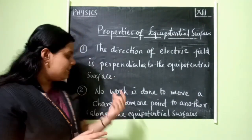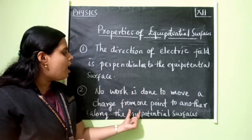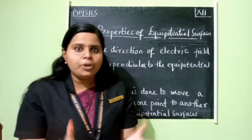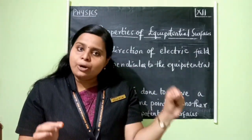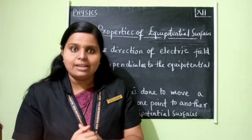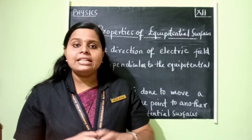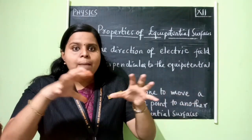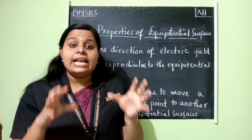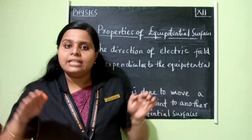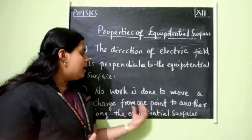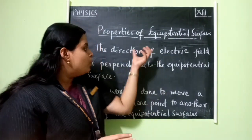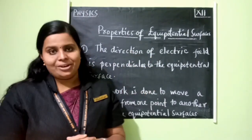What about the second property? No work is done to move a charge from one point to another along the equipotential surface. If you take a charge and move it from one point to another on an equipotential surface, no work is done. Why? Because the surface level of potential is the same and equal everywhere on it.